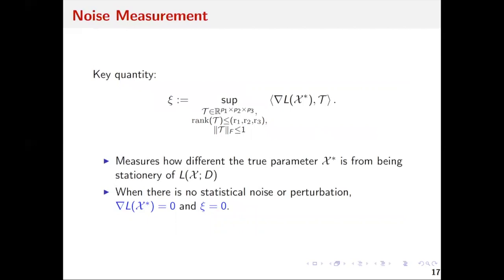This CC measures how far the true parameter X star is from being a stationary point of L. If there's no noise and everything is observed clearly, we should expect the gradient of L at X star to be zero, because X star should be the minimizer. But when there is noise, this gradient is not zero, and CC quantifies the noise level.